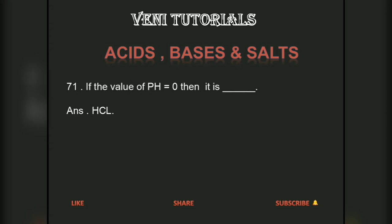If the value of pH is equal to 0, then it is HCl. If the value of pH is less than 7, then it is called an acid.